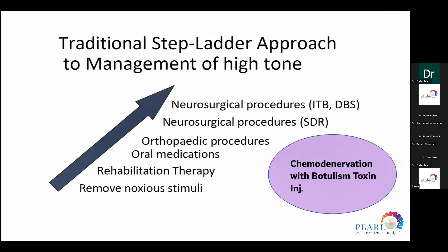We traditionally use a step-ladder approach to manage high tone. The first two rungs — removing noxious stimuli and rehabilitation — are the main cornerstones and must always be present and regular to help improve spasticity. The additional steps, starting from oral medication, orthopedic procedures, and neurosurgical procedures, are add-ons that help ease pain and reduce comorbidities and the need for surgical intervention. I'll discuss each one, with focus mainly on chemodenervation using botulinum toxin.